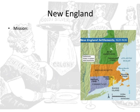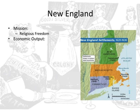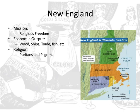We're going to do the same thing for all the colonial regions. The mission of New England was religious freedom — the English who settled there wanted to escape the religious chaos occurring in England and Holland. The Pilgrims initially sailed from England to Holland and then to the New World looking for freedom to practice their own religion. Economic output was mostly based on available raw materials: they built ships from abundant wood, and engaged in a lot of trade in ships and fish. Religion was dominated first by Pilgrims, but mostly Puritans — these were congregational churches.